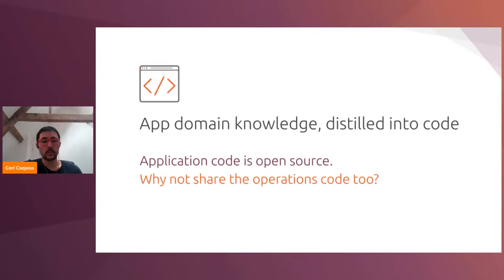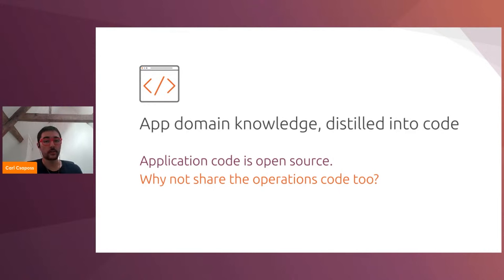So what is a charm? Several organizations and enterprises recognize the value of sharing open source application software. Many of those organizations have similar operational requirements — for example, an organization deploying a database might require that it is highly available, that if a machine goes offline or an entire cloud region goes offline, read and write traffic to that application must continue. As another example, they might require regular automatic backups. The idea with Juju and charms is to take the idea of sharing open source application code one step further and also share the operational knowledge required to deploy, operate, and manage those applications, packaged into shareable Python code called charm operators, or charms.